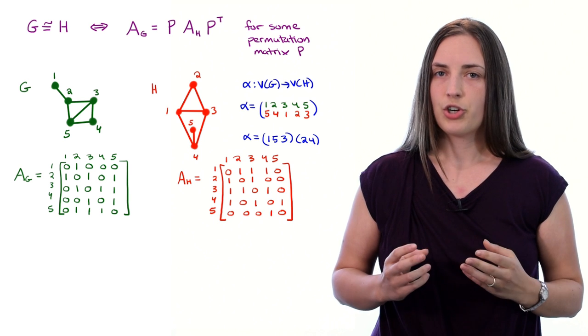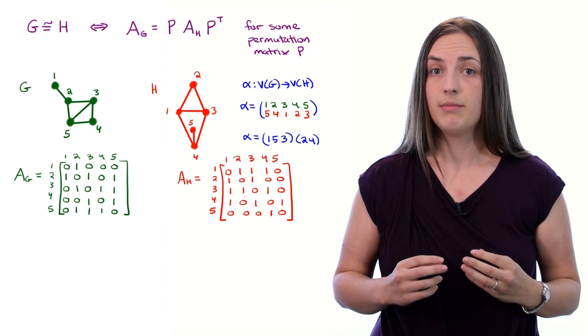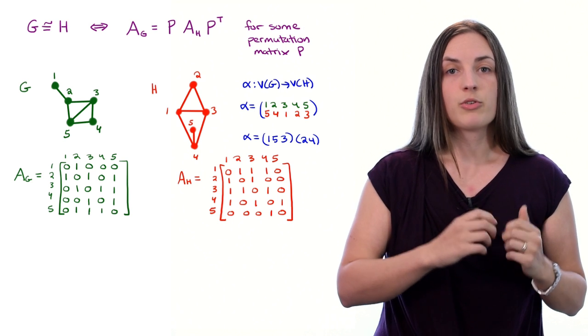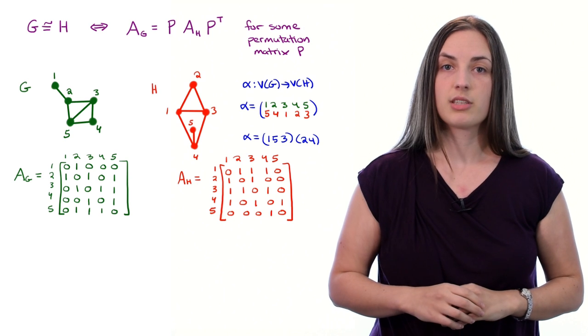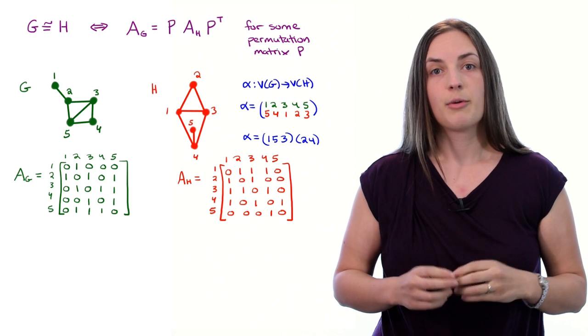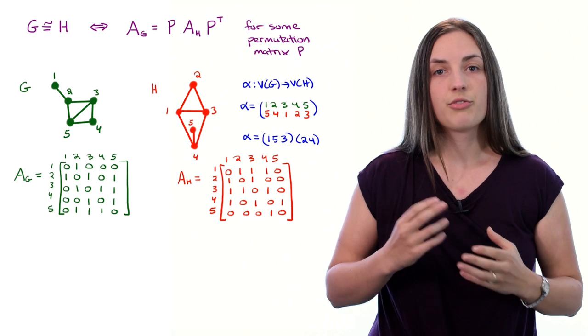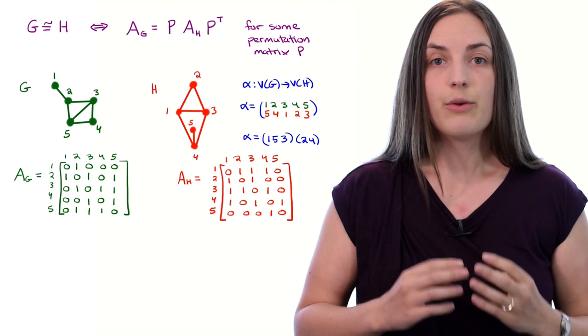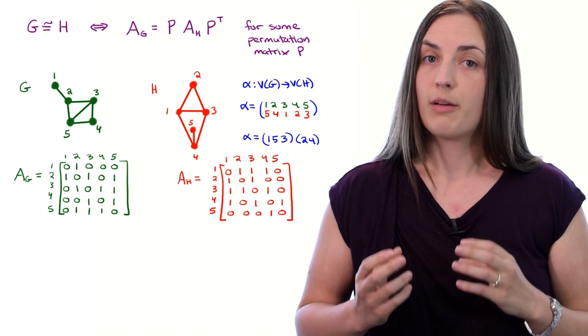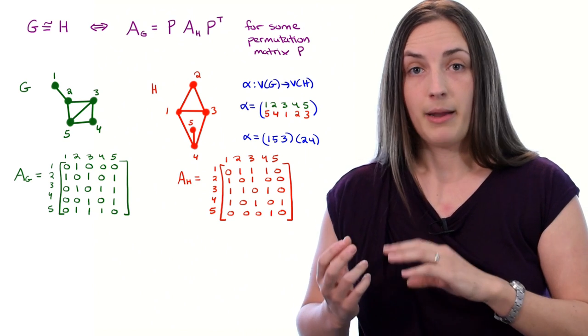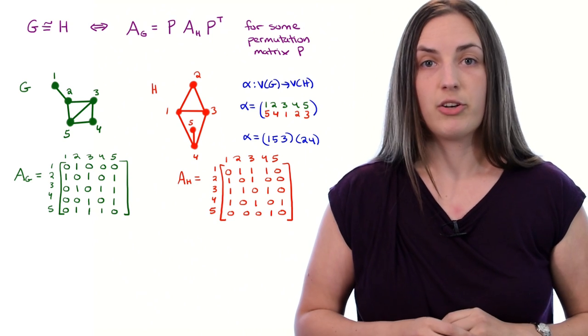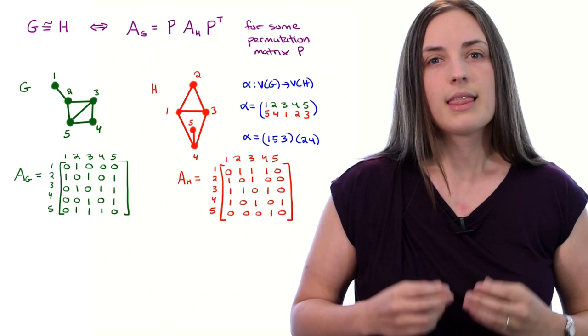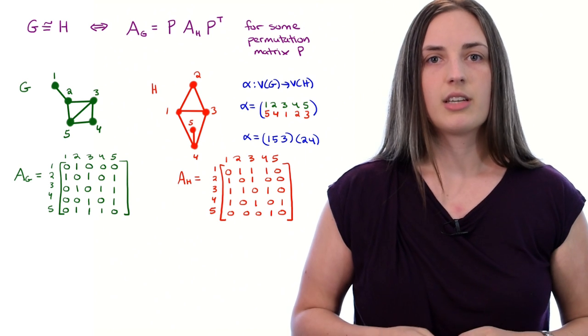Our next step is to determine if there is a permutation matrix P such that P times the adjacency matrix of h times P transpose will give us the adjacency matrix of g. This problem of finding the permutation matrix P is essentially equivalent to finding a mapping α like we did before. If you find such a matrix P, it will be associated with a mapping α, and if you find a mapping α, it will be associated with a permutation matrix P.